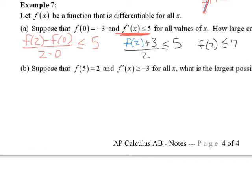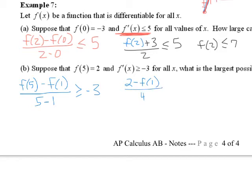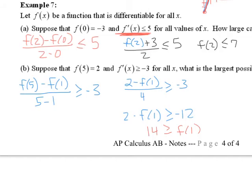Let's try part b. We set up the slope of our secant line: f of 5 minus f of 1 over 5 minus 1, and this is greater than or equal to negative 3. So our secant slope is always greater than or equal to negative 3. Substituting in values, we get 2 minus our value of interest over 4 is greater than or equal to negative 3. Then 2 minus f of 1 is greater than or equal to negative 12, and we conclude that 14 is greater than or equal to f of 1. I'll leave the diagram for that as a challenge to the viewer.